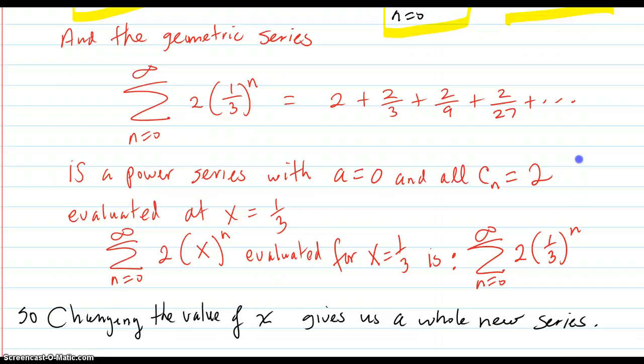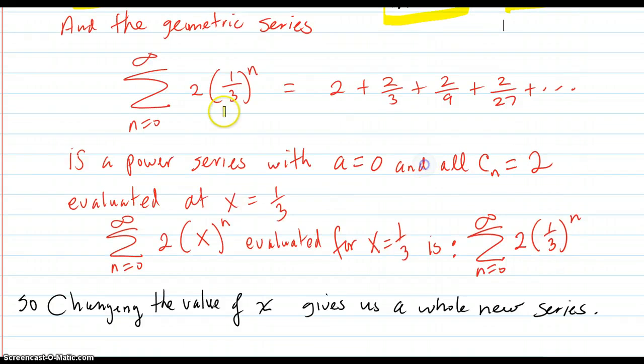This geometric series, 2 times (1/3)^n, n equals zero to infinity, equals this. So it's a power series with a equals zero and all the c_n equal to 2, evaluated at x equals 1/3.